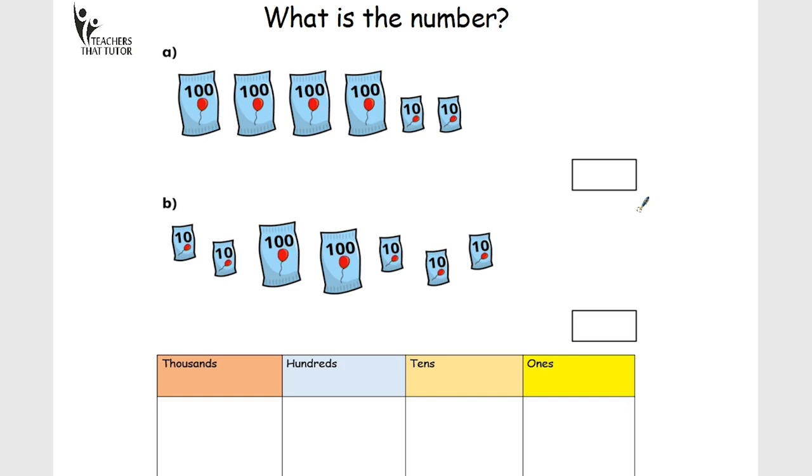And then you'll look at lots of different representations. So here we've got bags of balloons, again, something the children might be familiar with. And we've got bags of hundreds. We've got one, two, three, four. So we've got 400 here. And we've got two bags of tens. That's 10 and 20. And then if we put those two parts together, it would be 420.